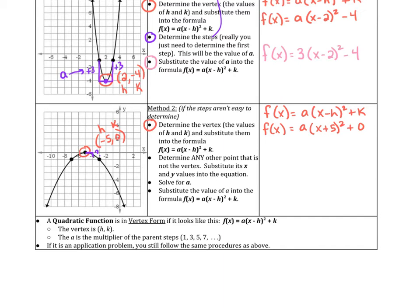So in that case, what you have to do is determine any other point that is not on the vertex. So here's the point here. Any other point, it doesn't matter what it is, as long as it's not the vertex. So the coordinates of that point are negative 3, negative 1. And what you're going to do is substitute those values in for x and y, so that you can solve for a. So the negative 1 goes in for y, which is f(x), and the negative 3 goes in for x.